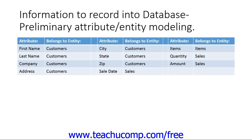Many times, when initially approaching data modeling, it may be easier to list the various attributes that you want to record, and then try to find what entities those attributes describe. The entities will become the various tables in your database. The attributes will become columns within the entity's tables. Remember that each attribute or column in your table must share a one-to-one relationship with the subject of that table, or the entity.